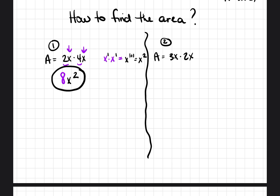Now repeat the process for 3x times 2x. Multiply the coefficients: 3 times 2 equals 6. Then multiply the variables: x times x. Both have an invisible exponent of 1, so 1 plus 1 gives us x squared. The area of the second rectangle is 6x squared.